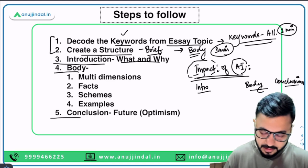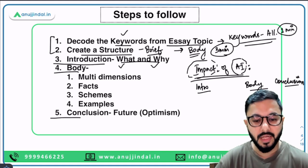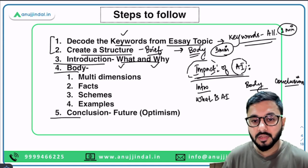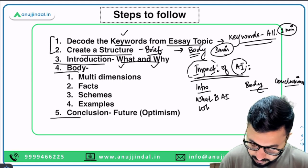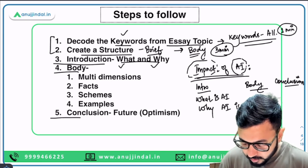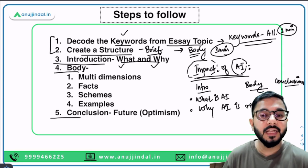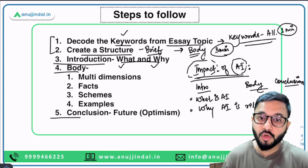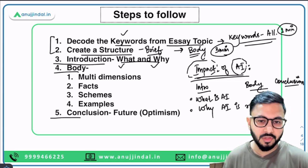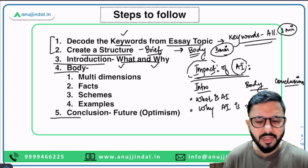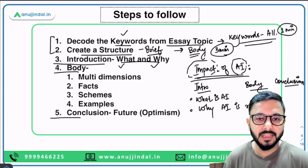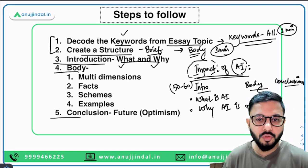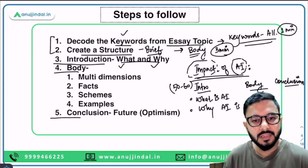In the introduction, there are two questions you can answer: what and why. For example, here: what is AI? And not why AI exists, but why the study of AI is so relevant today — because through this essay we are studying and discussing the impacts of AI. You can write either of these or both. For the RBI examination, the introduction should be about 50 to 60 words, not more than that.